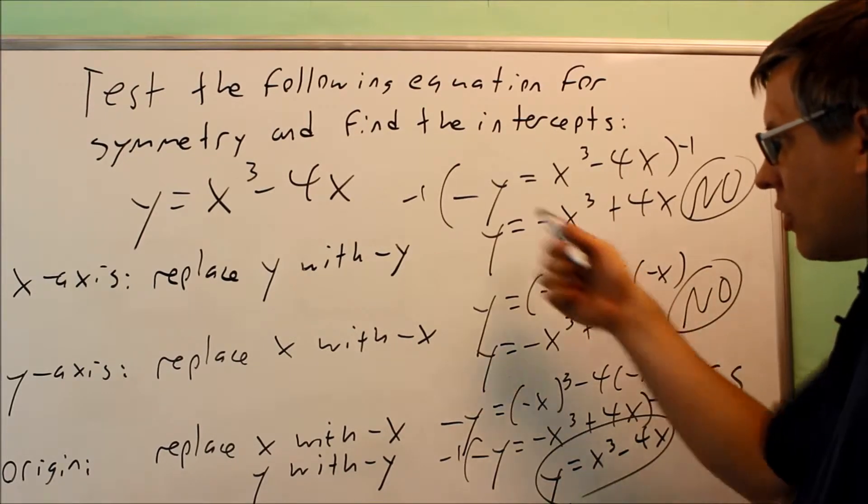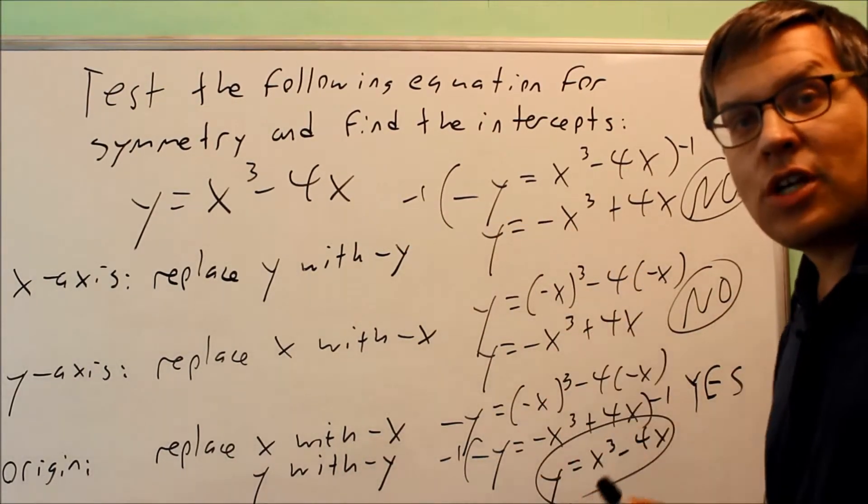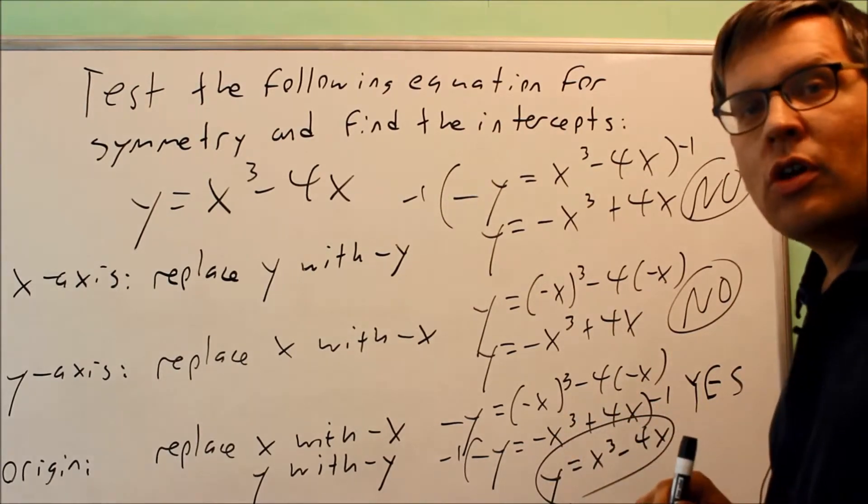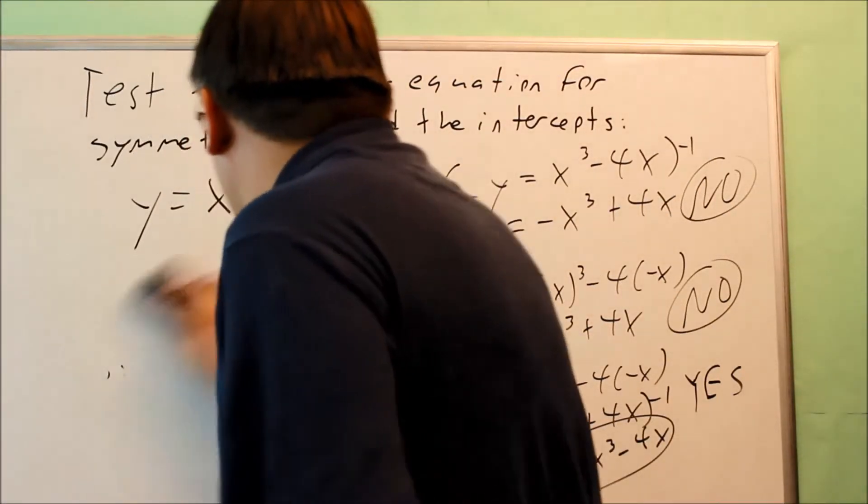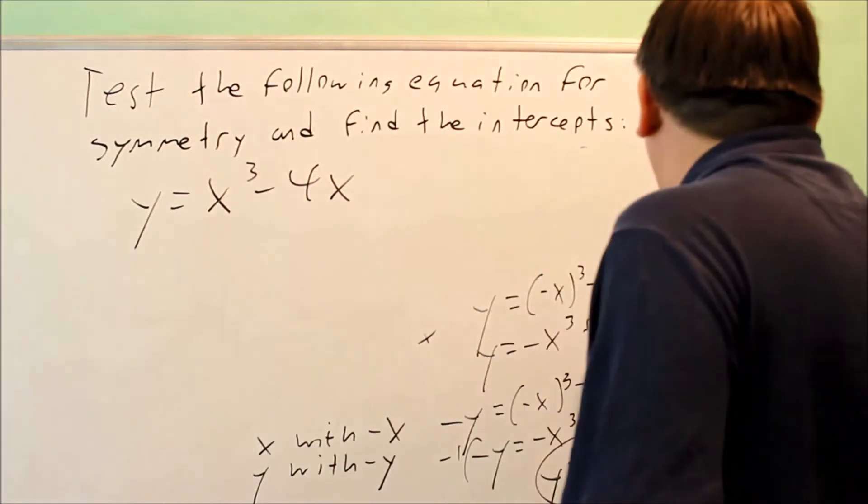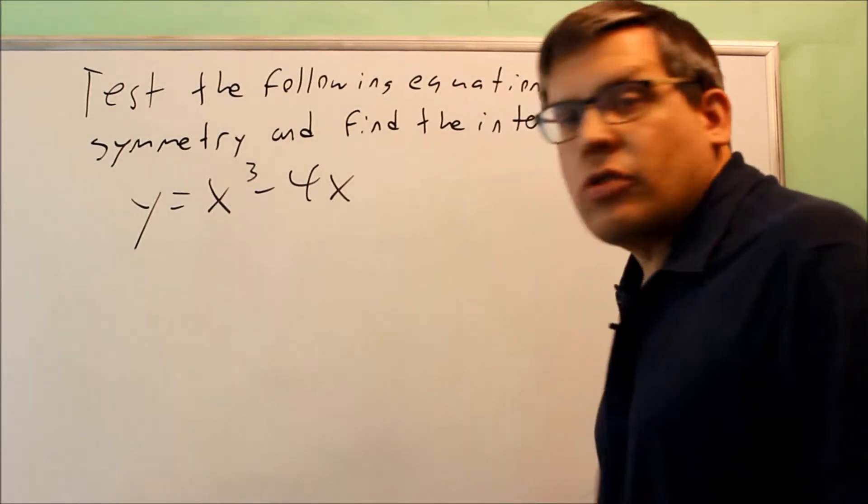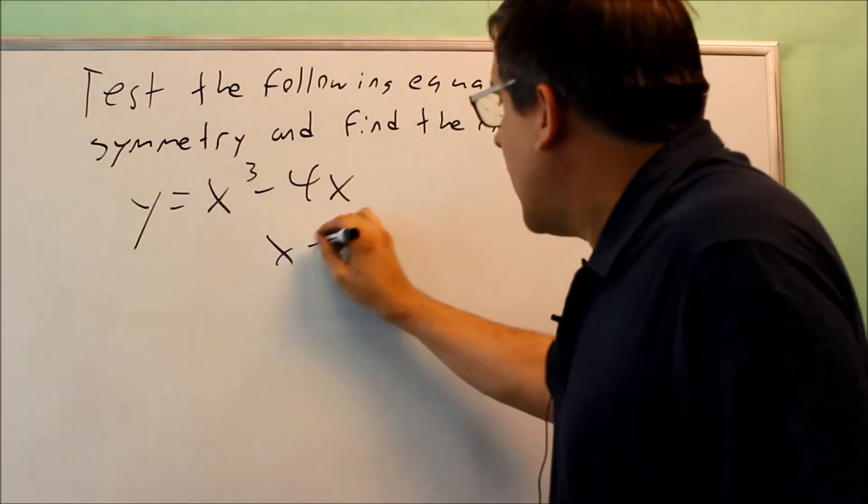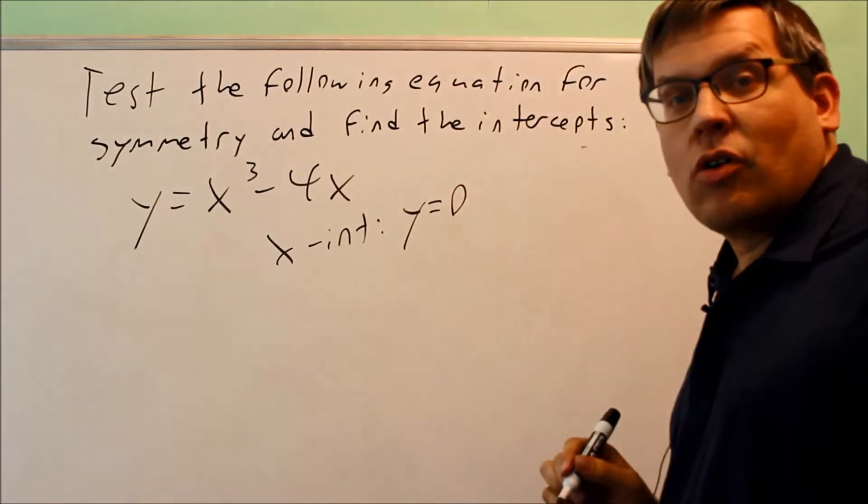So even though you get no symmetry for x-axis and y-axis, does not mean that you get no symmetry for the origin. So now let's find those intercepts. Every time you want to solve and find the intercepts, you're always going to do the same process. If you want to find the x-intercept, you want to put in a 0 for y.